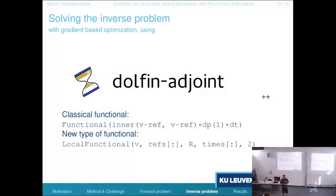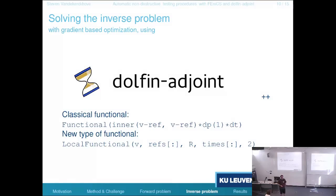Maybe you can do multiple measurements with multiple receivers, and you want to squeeze them all into the same objective functional to get better results. All those things more or less work in separate branches, so I have to merge them. If you're interested, please let me know — I'm happy to share this functional with you.